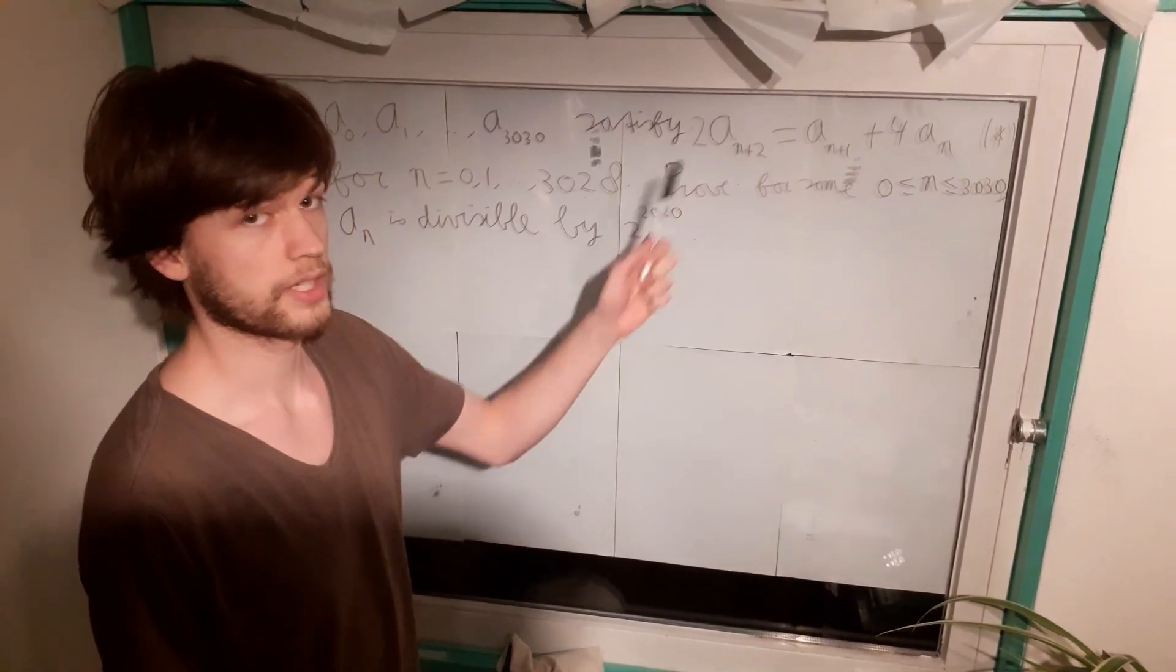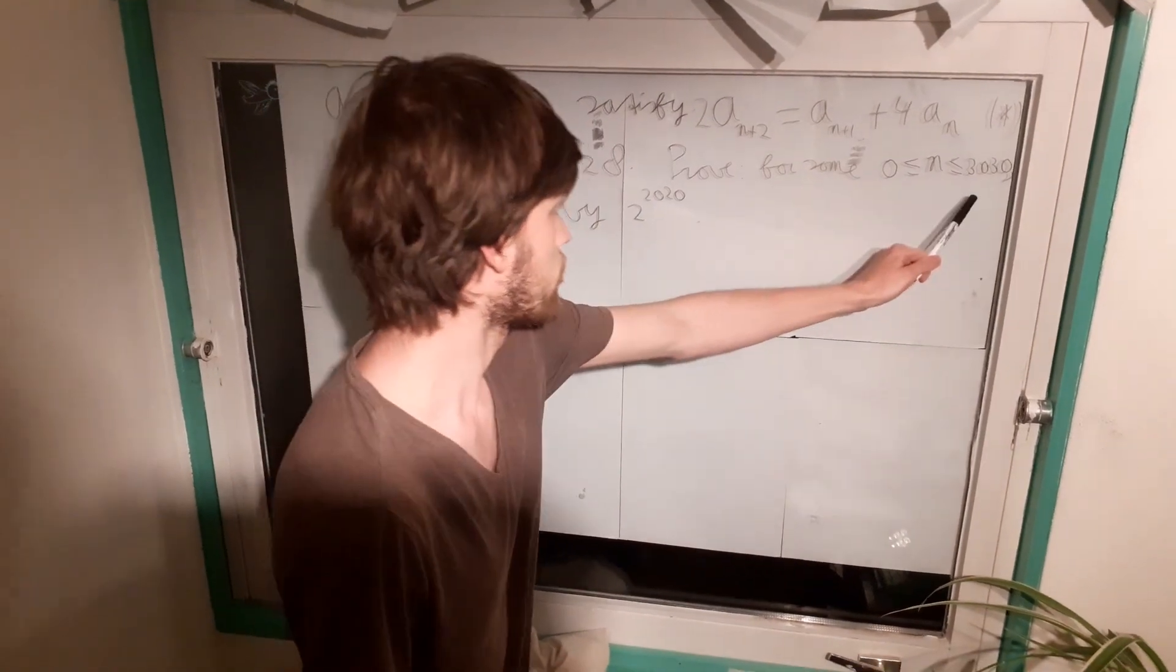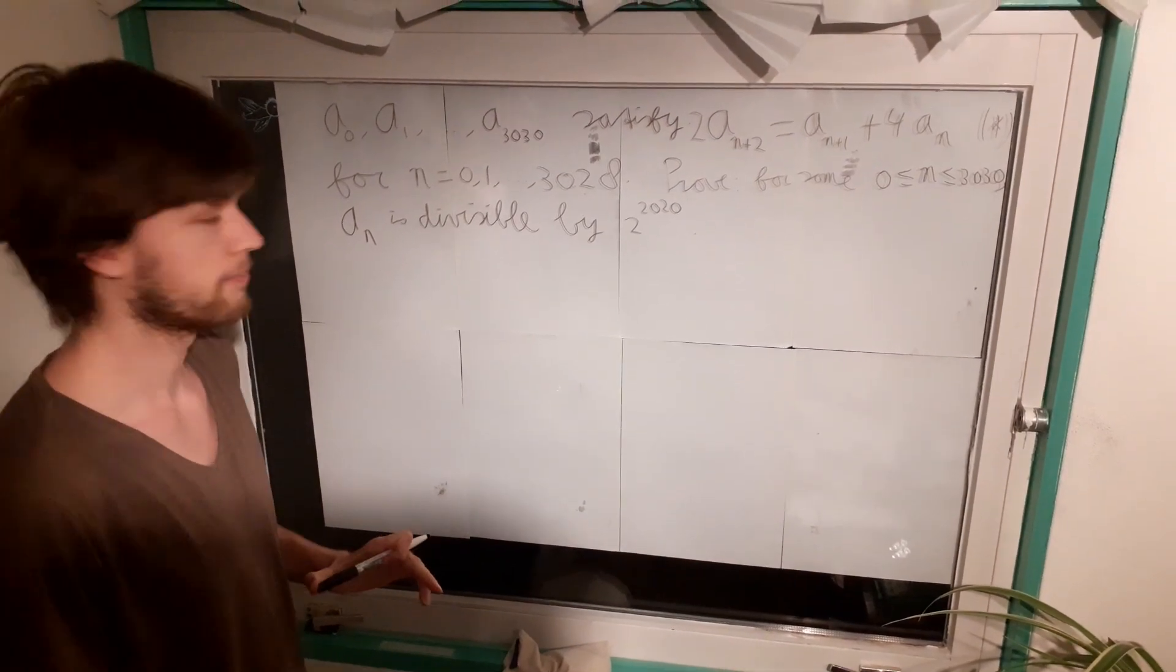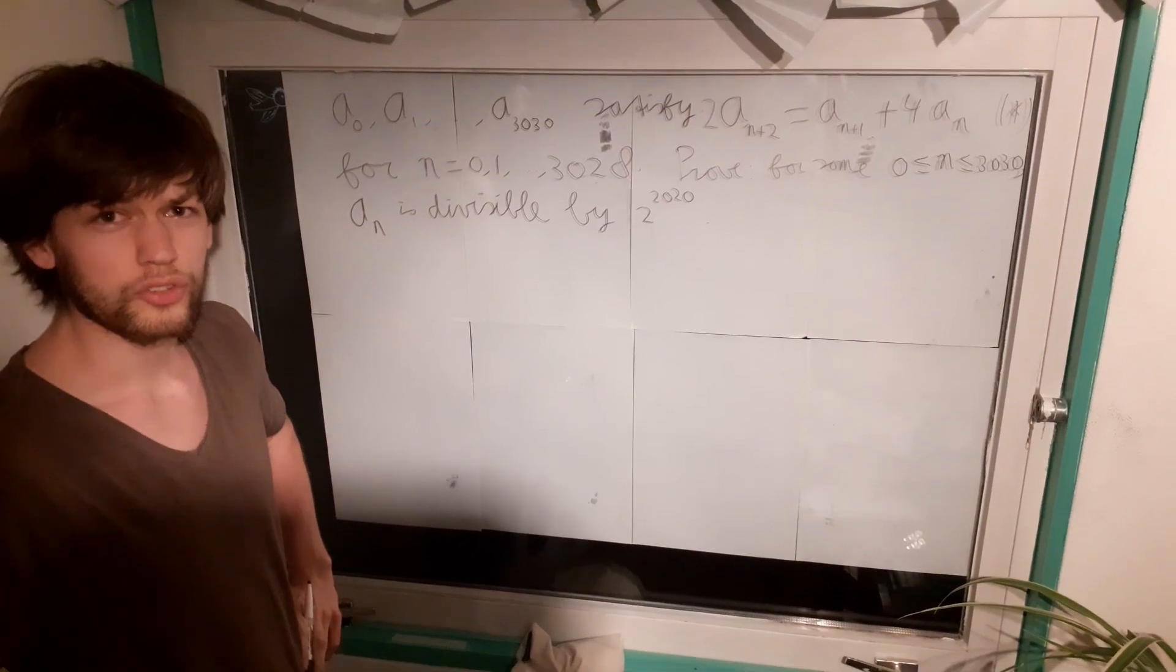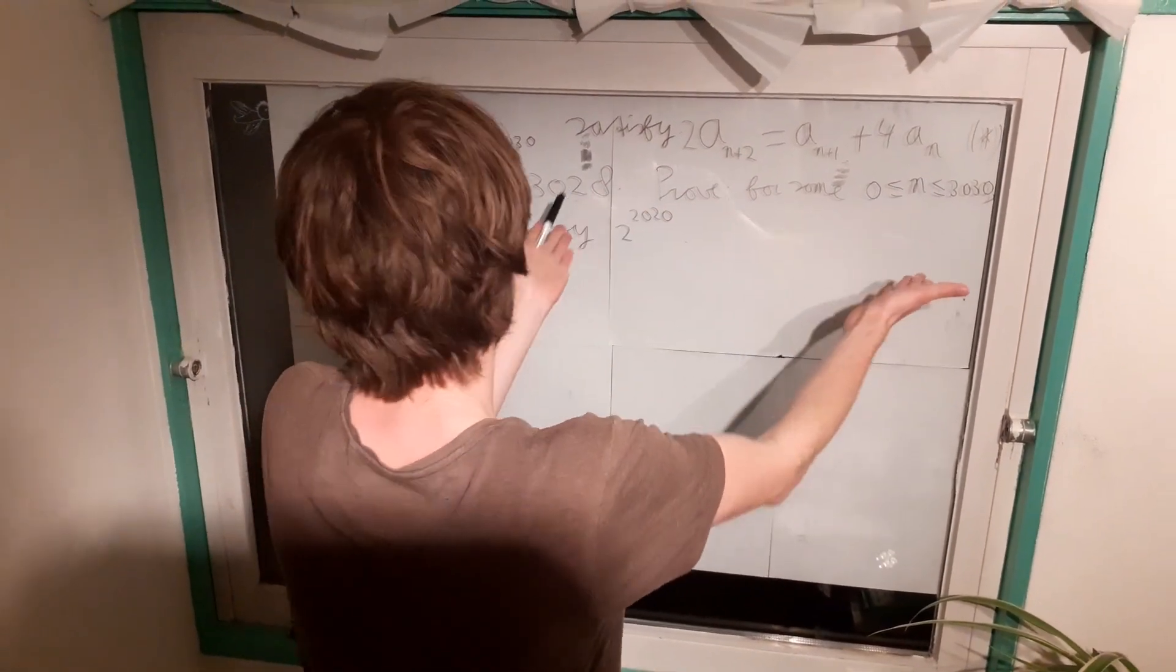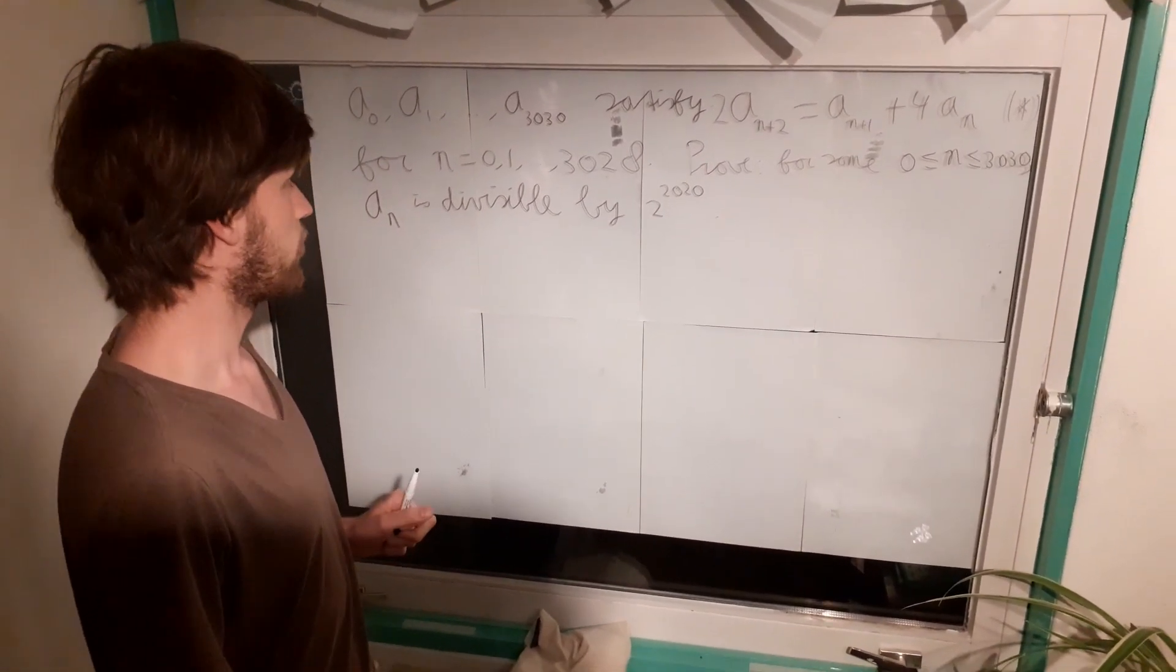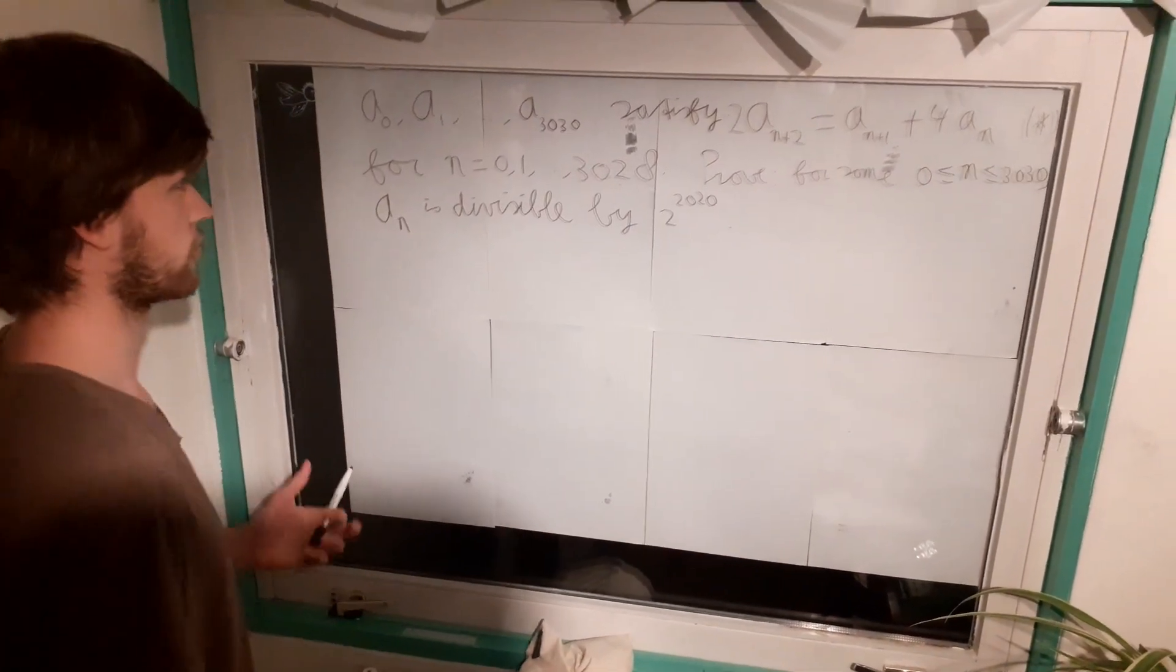Which is all n from which the equation actually makes sense. We have to prove that for some of these n's, at least one of them, a_n is divisible by 2 to the power of 2020. Well, this is a bit strange looking problem because we have some sequence, it satisfies some constraints and then somehow it has to be divisible by this huge number. So I wouldn't really know where to start.